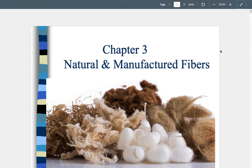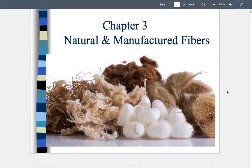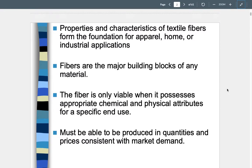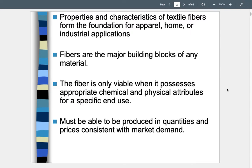We are moving into chapter three this week, which is all about the difference between natural and manufactured fibers. Last week we covered basic characteristics of different fiber types, and this week we're going into more detail about each individual fiber. Properties and characteristics of textile fibers form the foundation for apparel, home, or industrial applications. The exam will include chapters one, two, and three.